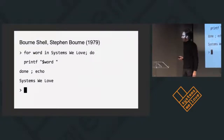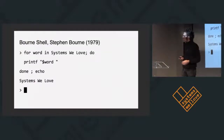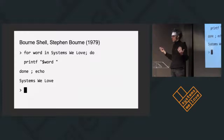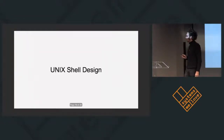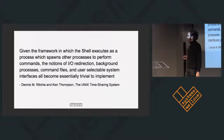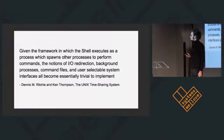Then in 1979, Stephen Bourne created the Bourne shell, which is Turing complete — a full programming language with all those nice properties of a programming language.